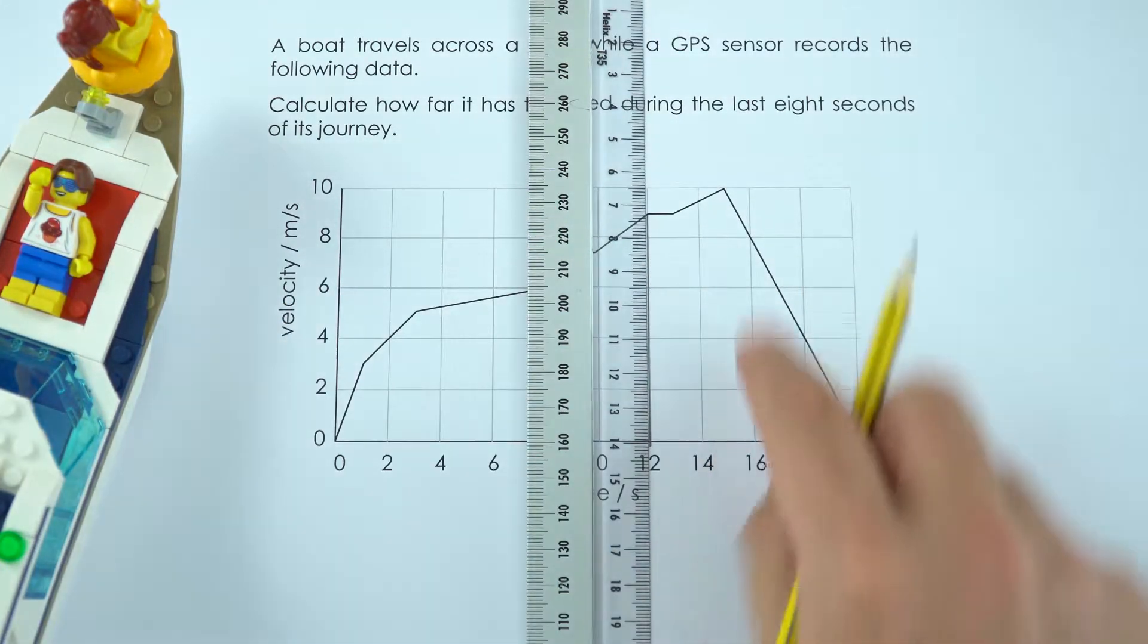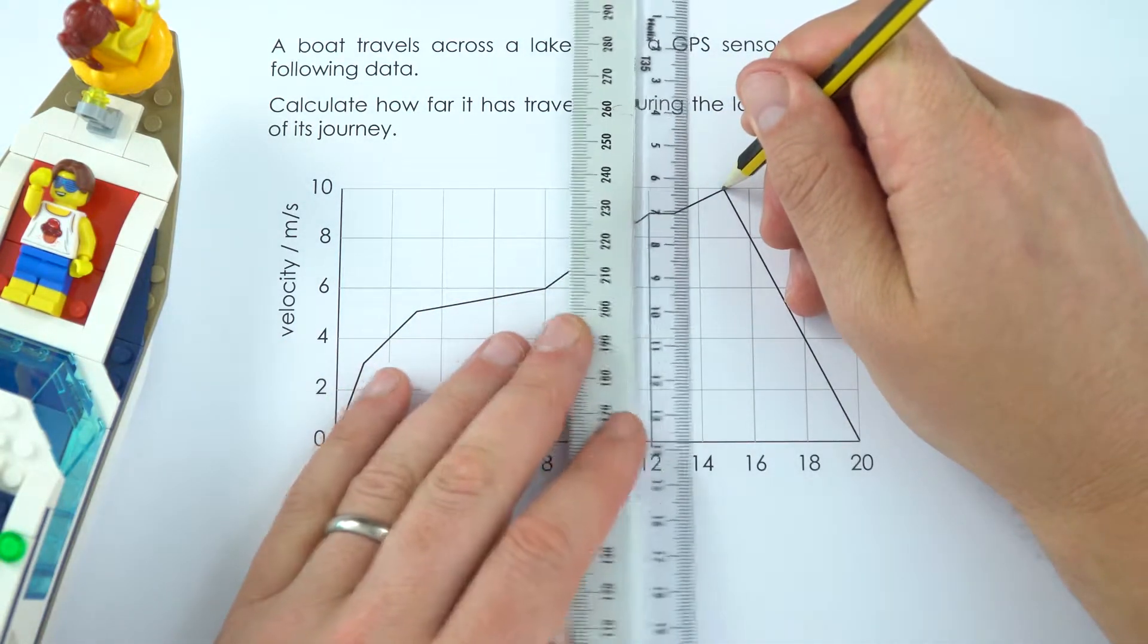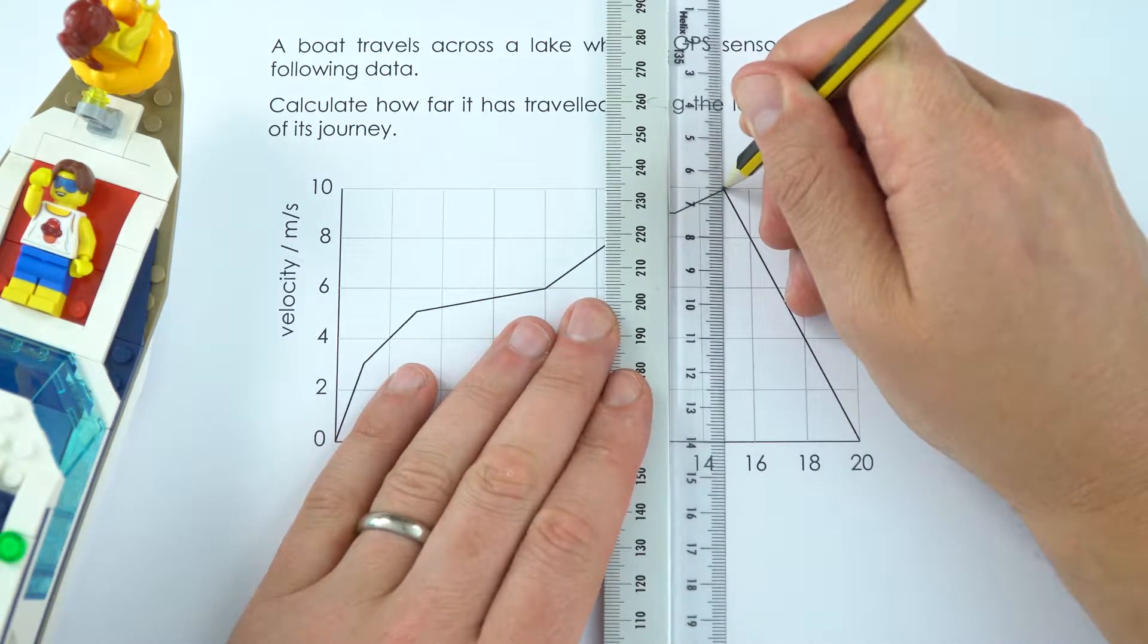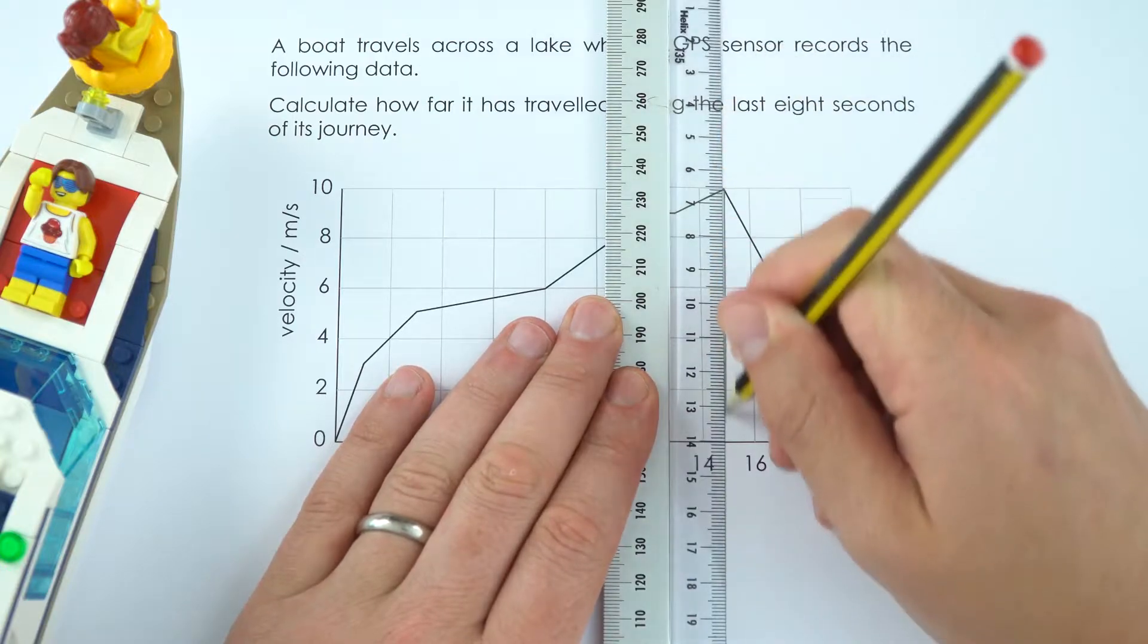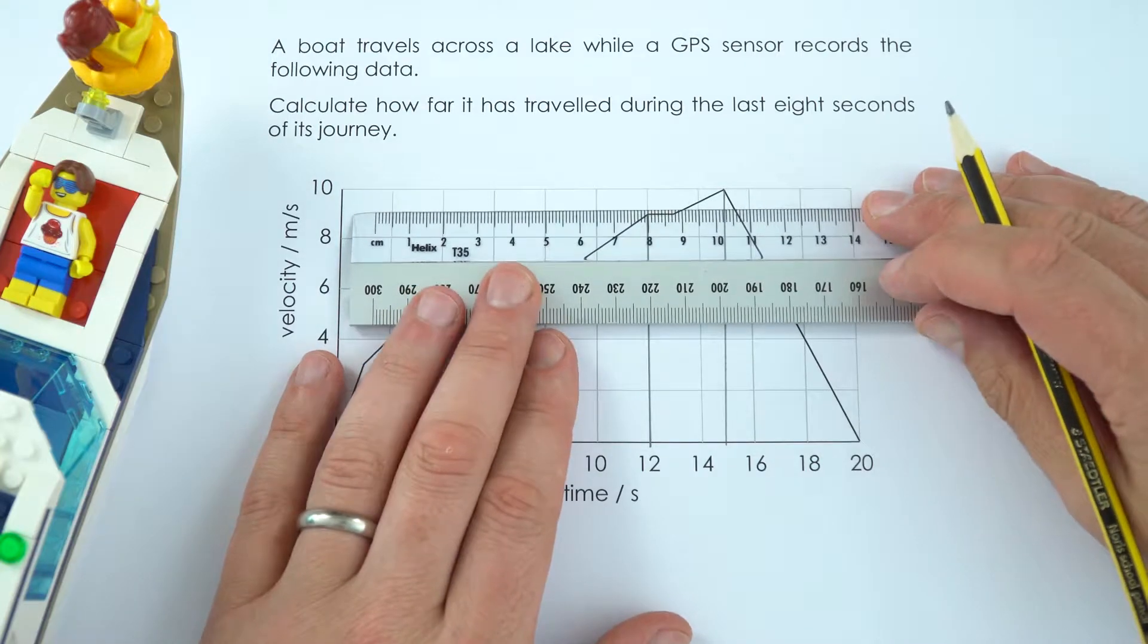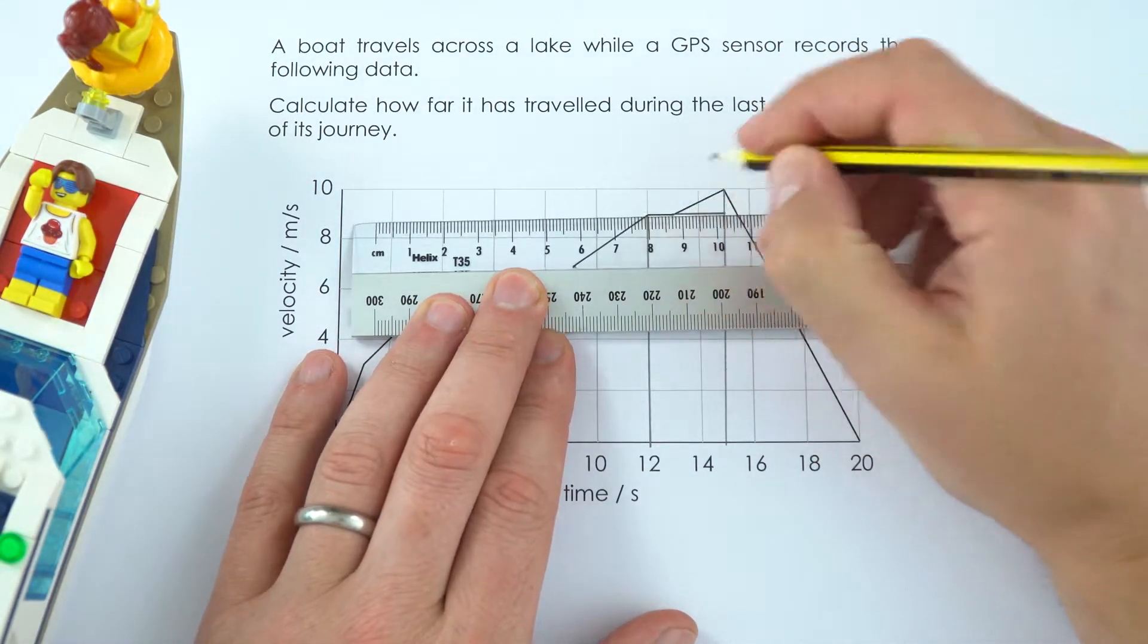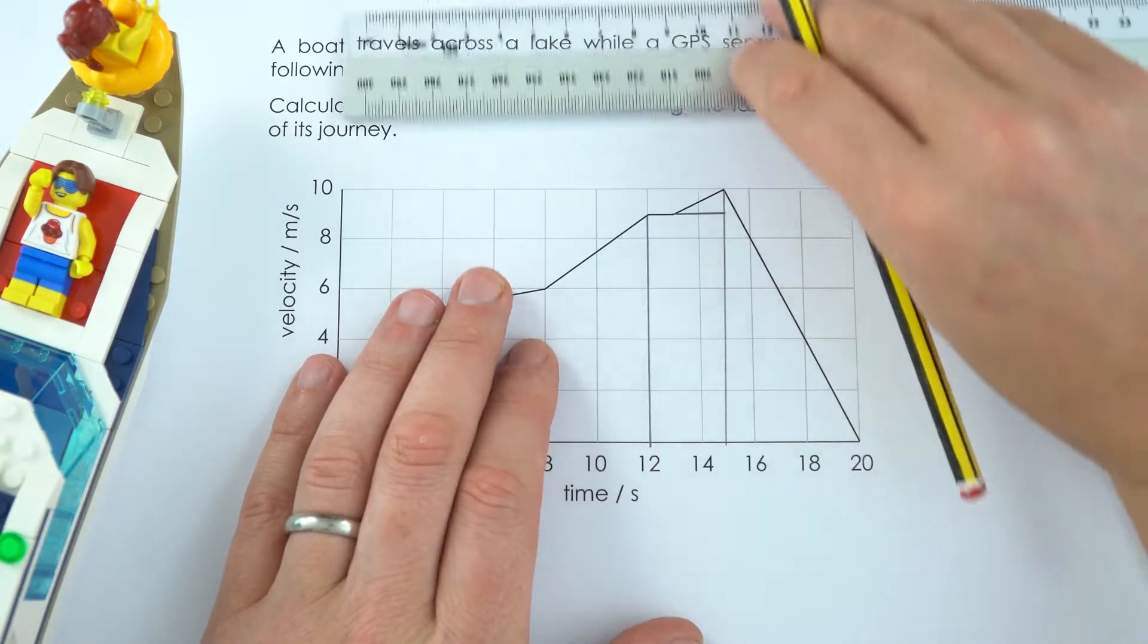Now the best way to do that is to divide this into some other shapes and I'm going to divide it into a big triangle that goes from 15 seconds onwards. So I've got this big triangle up here, I'm going to do a line across the top here and I'm going to change this other bit into a smaller triangle here and a rectangle there.